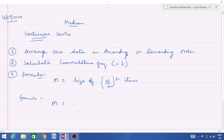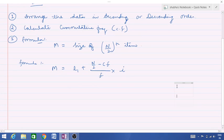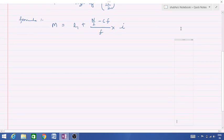That is median is equal to L1 plus n by 2 minus CF upon F into i. This F is for n by 2 minus CF. So when we apply this formula, then we can easily find out median.